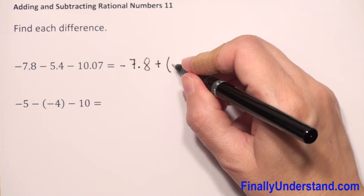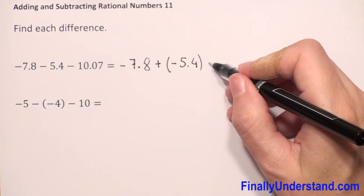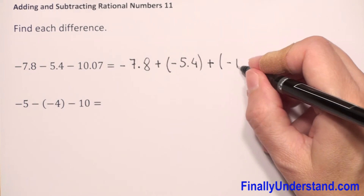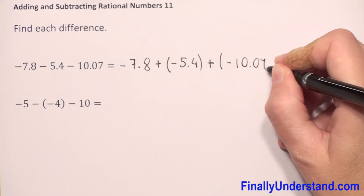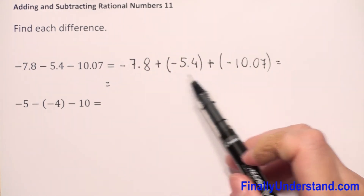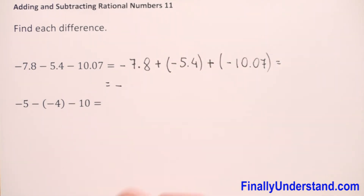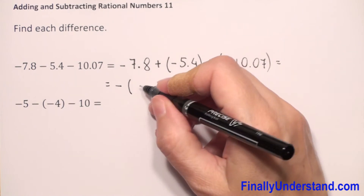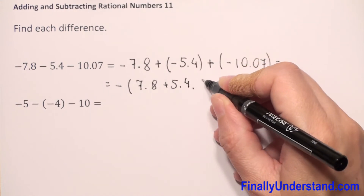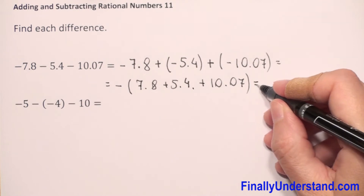Again, subtraction — we change to addition and the opposite of 10.07 is negative 10.07. So this is equal. Now we have addition of three negative numbers. Three negatives, so we copy the negative sign and we just add these three numbers: 7.8 plus 5.4 plus 10.07.